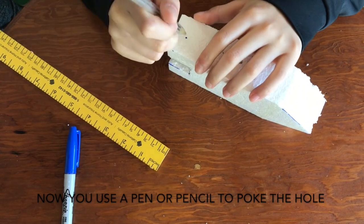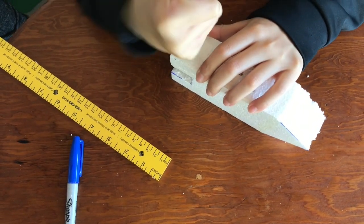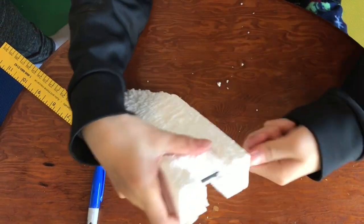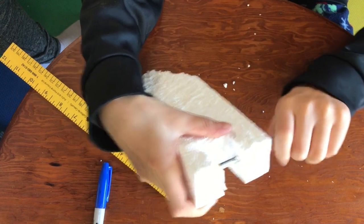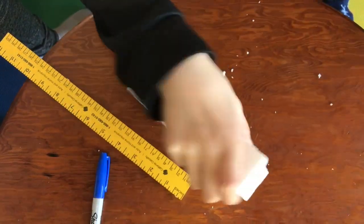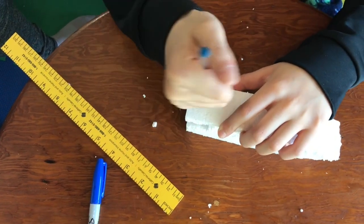Next, you use a pen to poke a hole through the back, and then the other side.